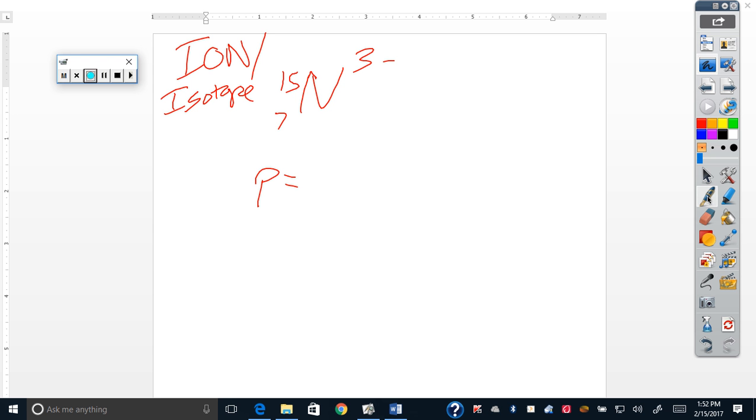Ion slash isotope. What is an ion, Julio? An ion has the same amount of protons but a different amount of electrons. Right, so that's why I have a negative charge.